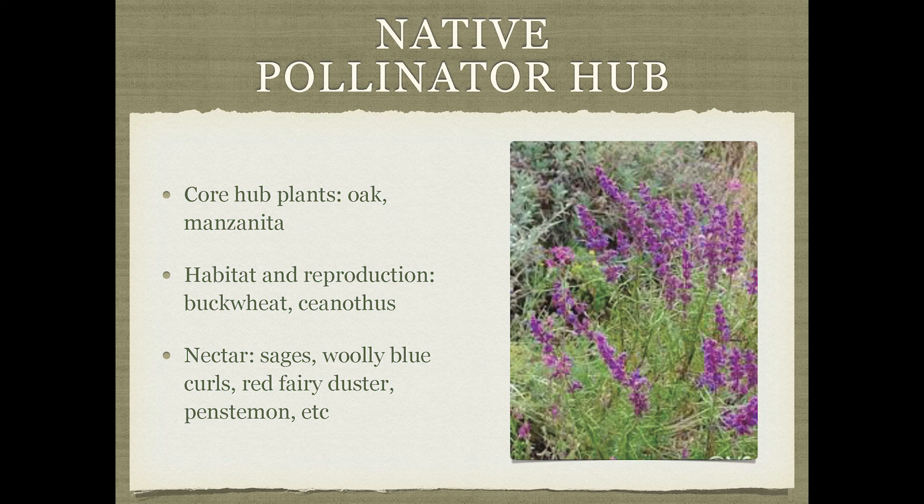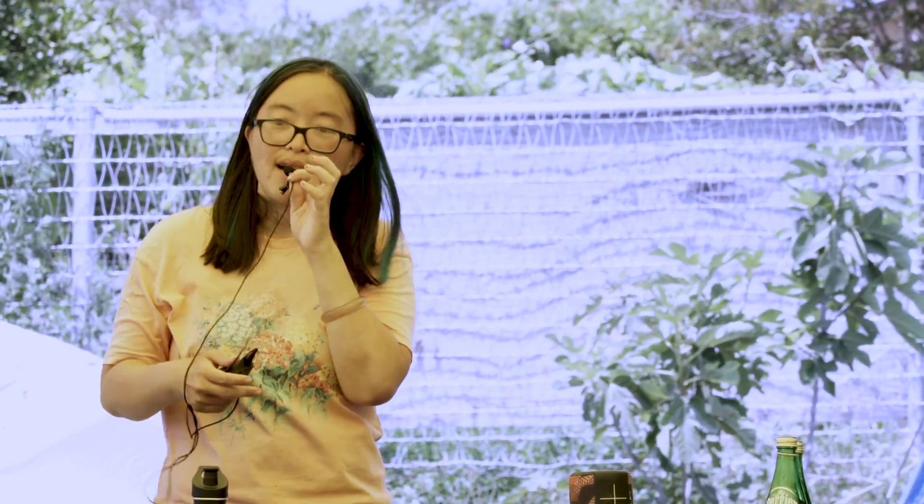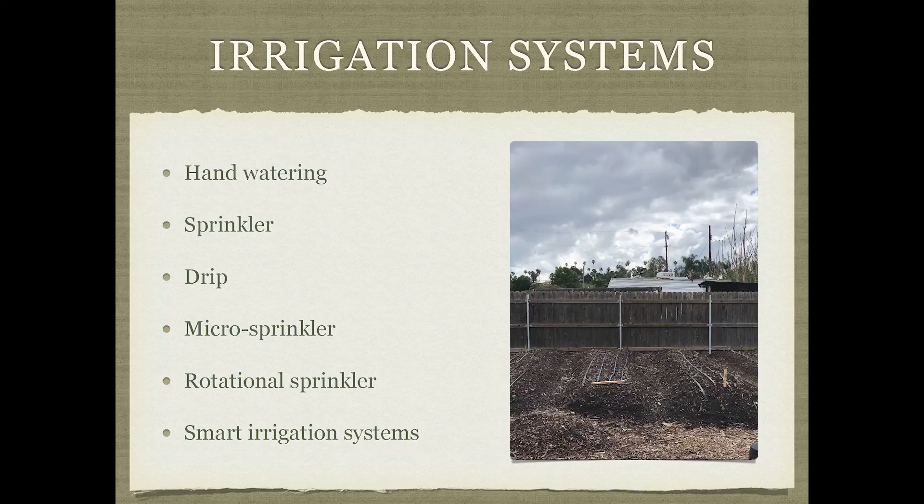Setting up a pollinator hub means having all of these different plant types to support all the different activities of native pollinators. At Buena Vista garden, we have manzanita, buckwheat, ceanothus, and sages, so we are trying to cultivate native pollinator space.